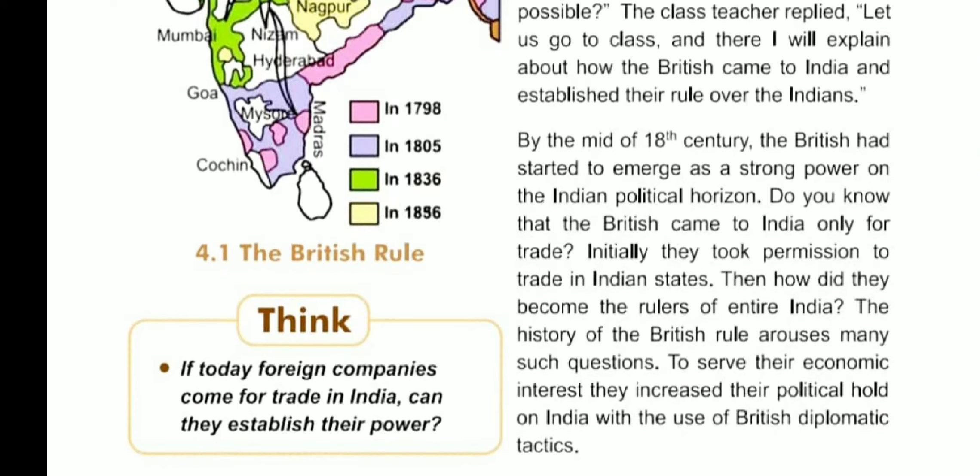By the mid-18th century, the British had started to emerge as a strong power on the Indian political horizon. Initially they came for trading purposes and took permission to trade in Indian states. So a key question arises: if their purpose was only trading, how did they become the rulers of entire India?